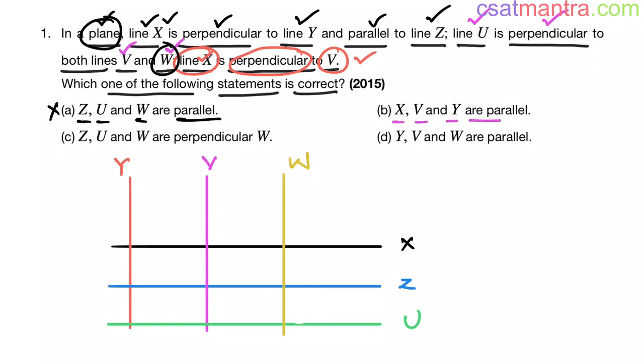z, u and w are perpendicular. Here w is not there. Typo. z and u are parallel. And w is perpendicular to them. So this option is also incorrect.